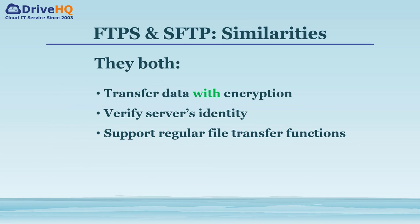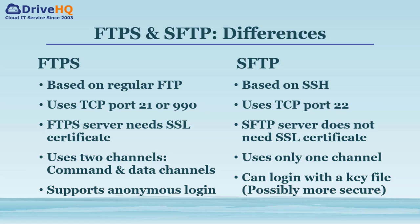FTPS and SFTP are similar — they both transfer data with encryption, verify server identity, and support regular file transfer functions. However, the underlying technologies are different. FTPS is based on FTP and uses the regular FTP port 21 or 990. SFTP is based on SSH and uses SSH port 22.